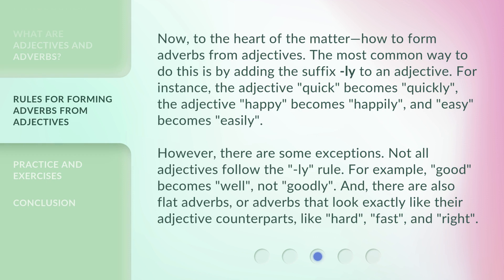Now, to the heart of the matter: how to form adverbs from adjectives. The most common way to do this is by adding the suffix "-ly" to an adjective. For instance, the adjective "quick" becomes "quickly," the adjective "happy" becomes "happily," and "easy" becomes "easily."